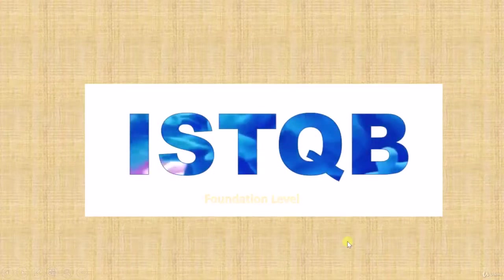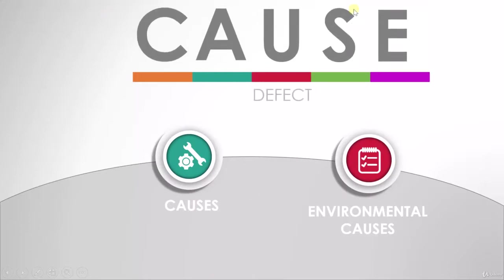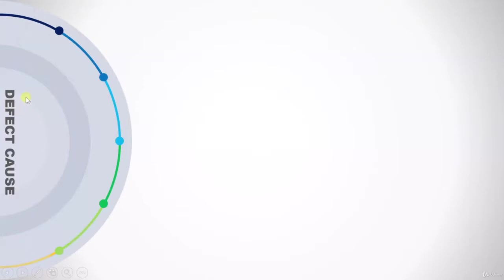Hello, welcome to ISTQB Foundation Level. In today's topic we are going to discuss about different causes of defect. We will see two topics: the normal causes of defect and the environmental causes of defect. Now let's start with the first topic — defect causes — where we will see five different causes.